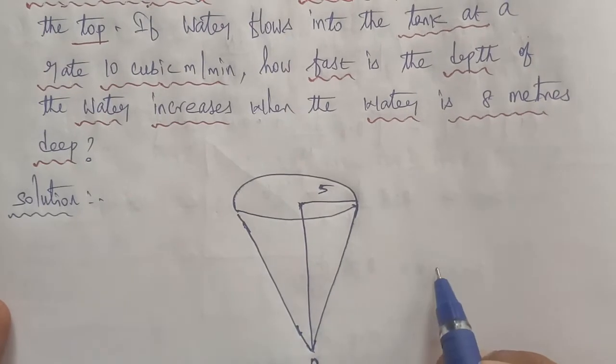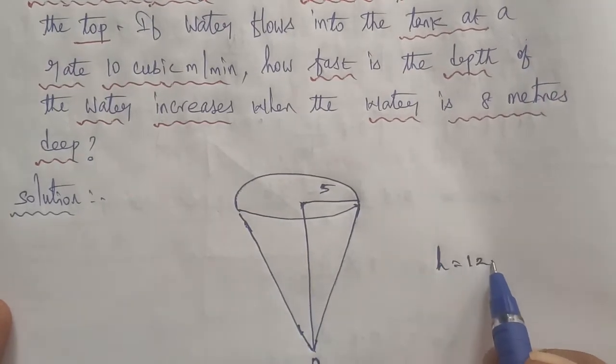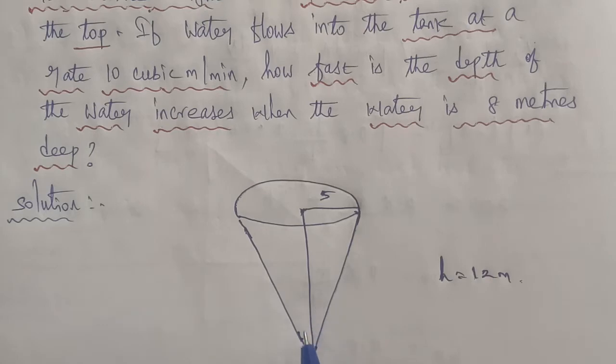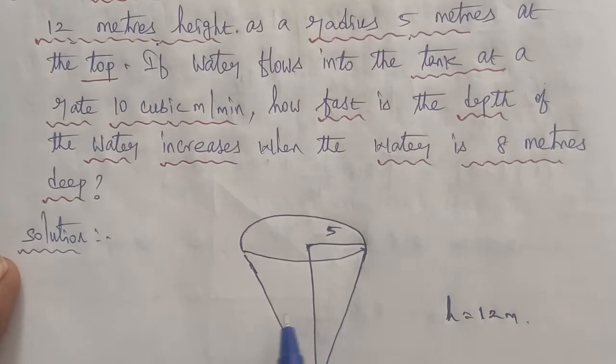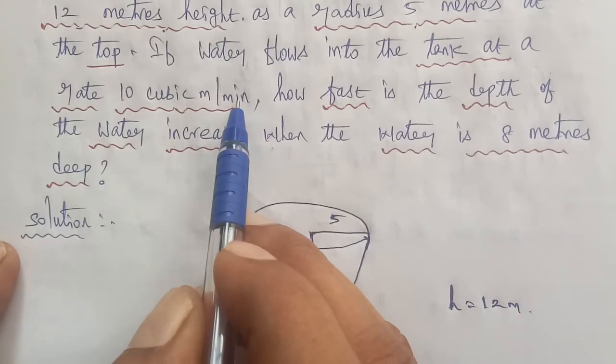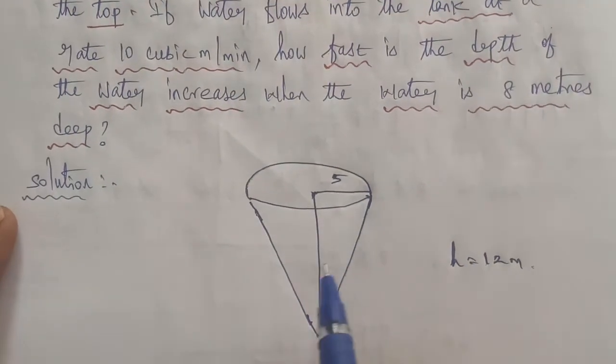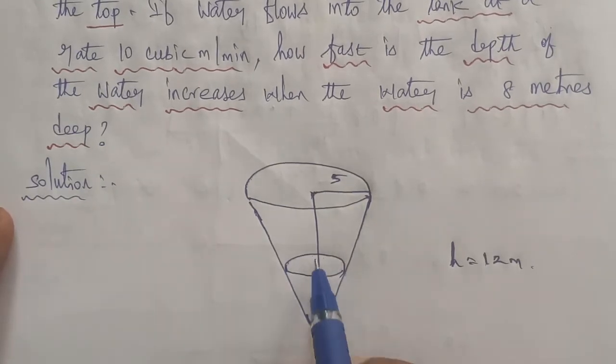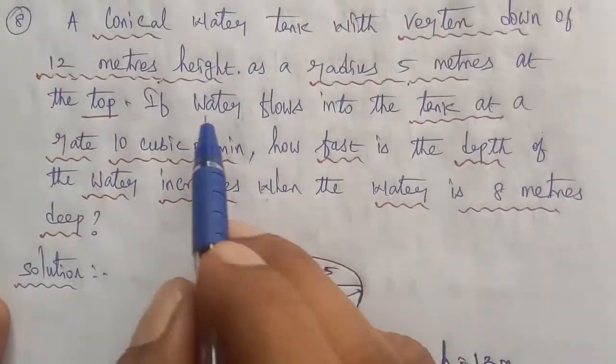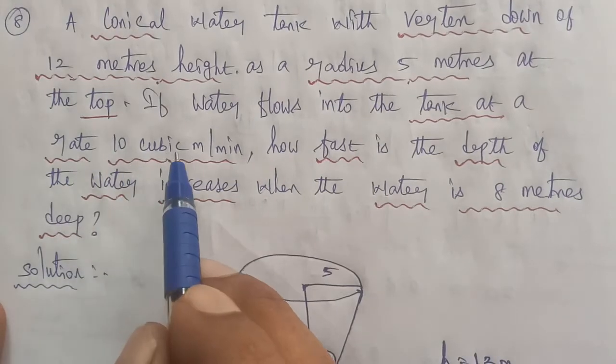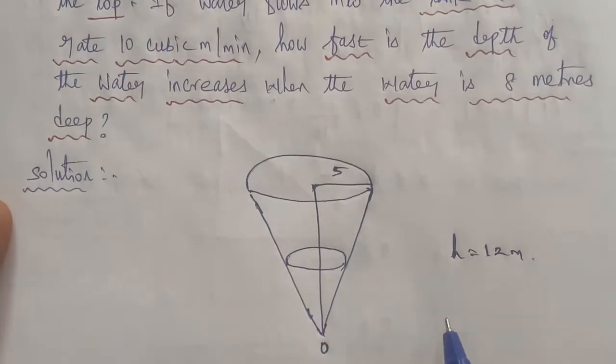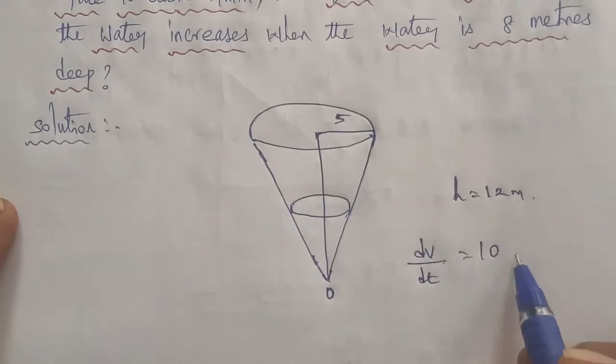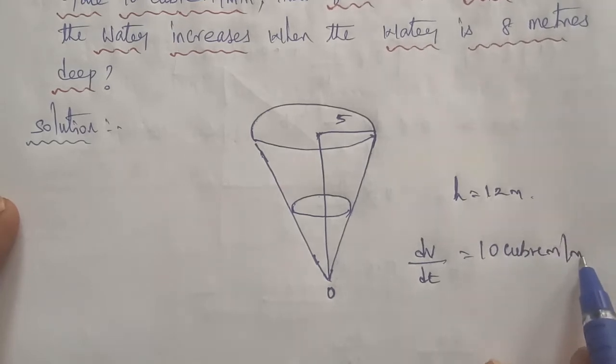Next, in the conical water tank, the water flows in. The water flow or speed, the rate, is given. For example, the water flow increases. The value given in the question, the water flows into the tank at a rate of 10 cubic meter per minute. Therefore dv by dt is equal to 10 cubic meter per minute.